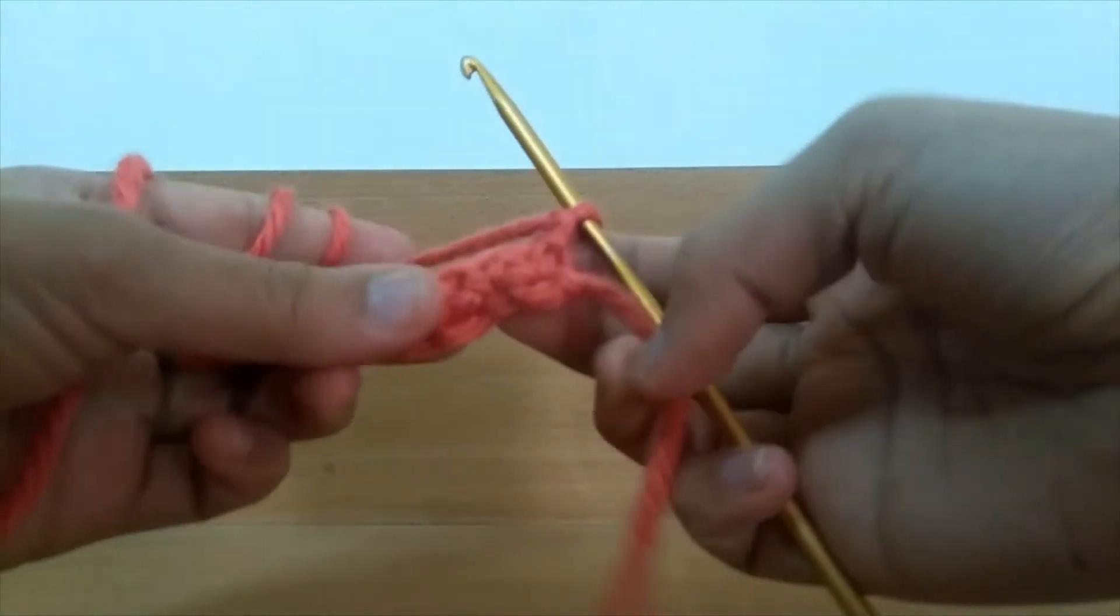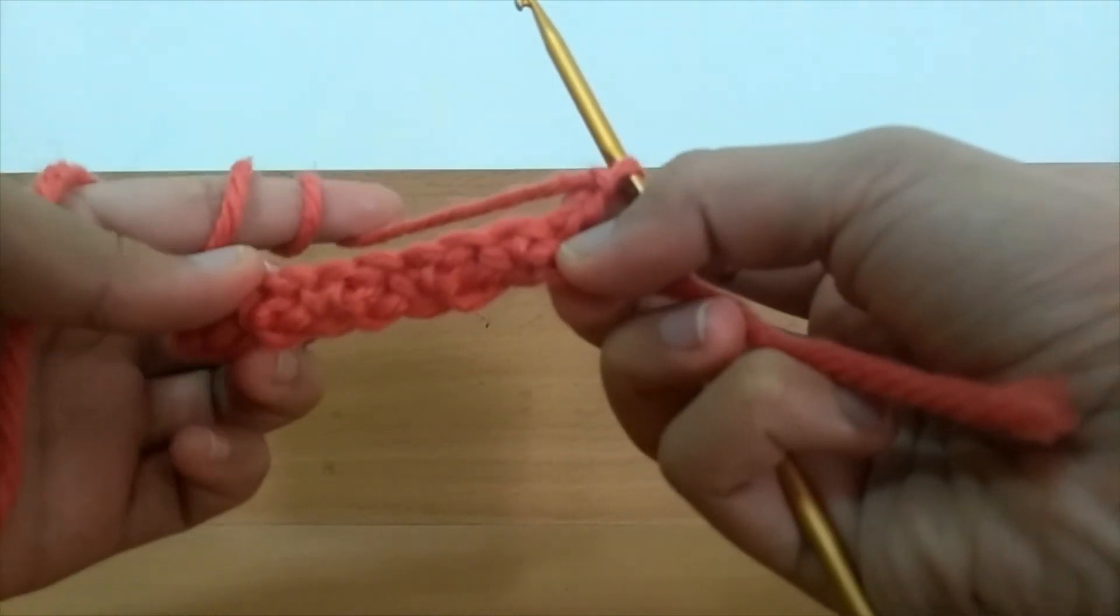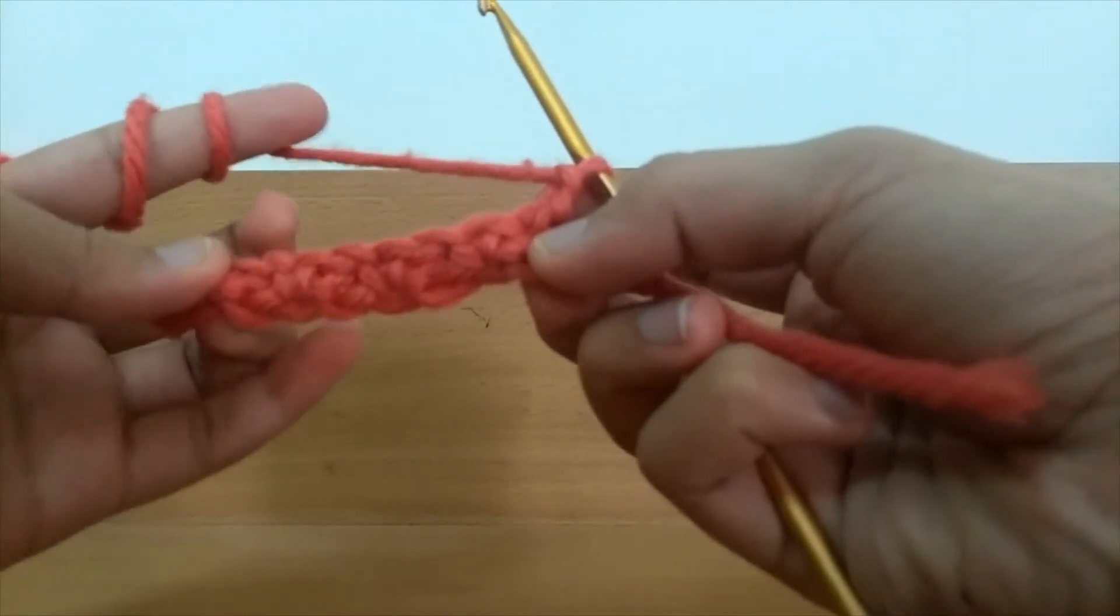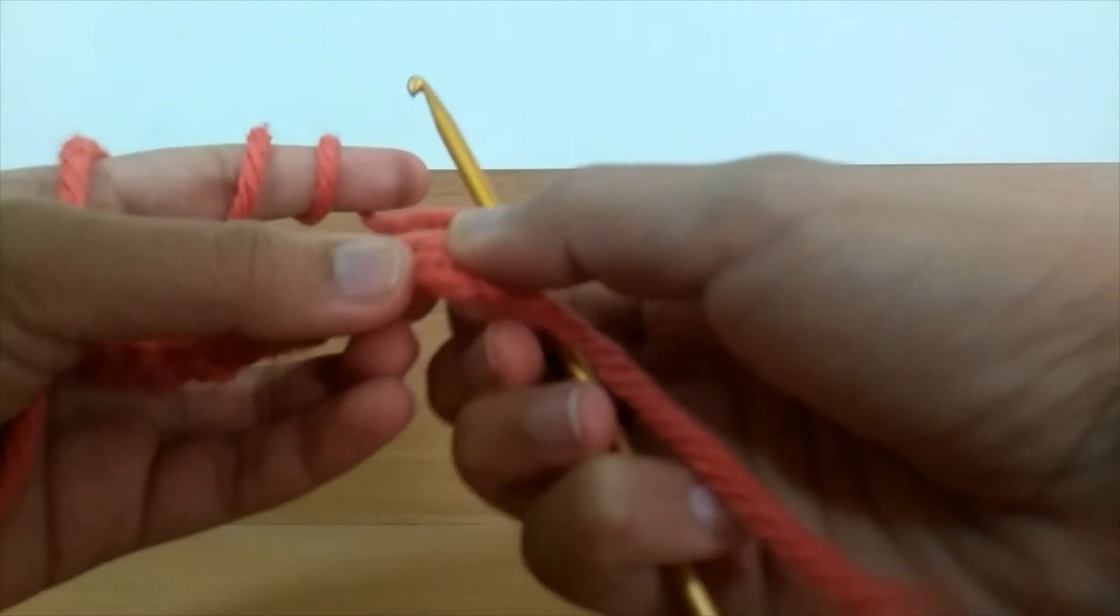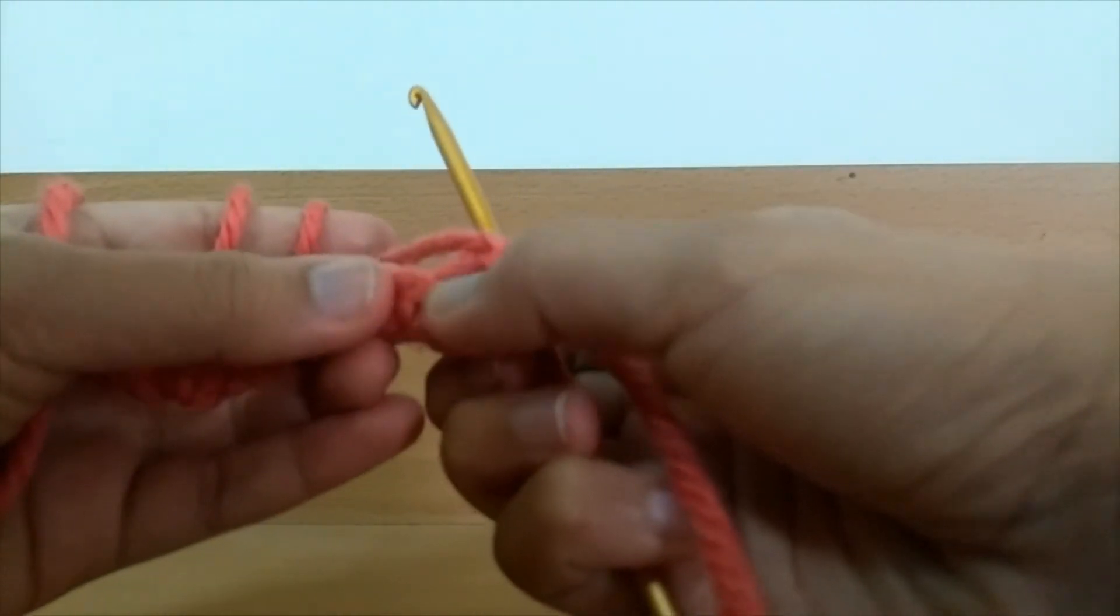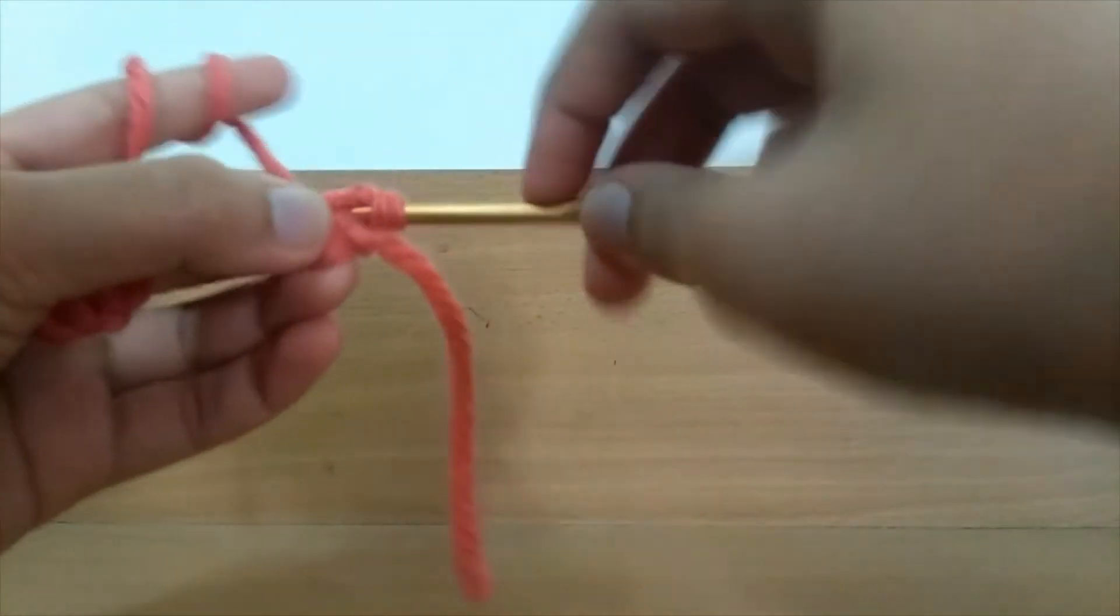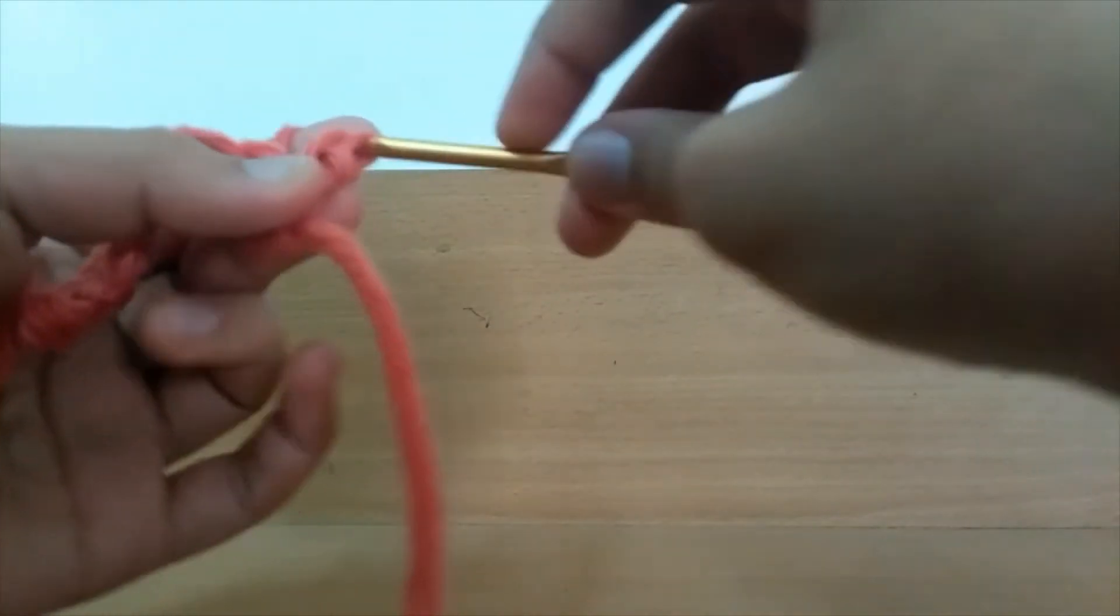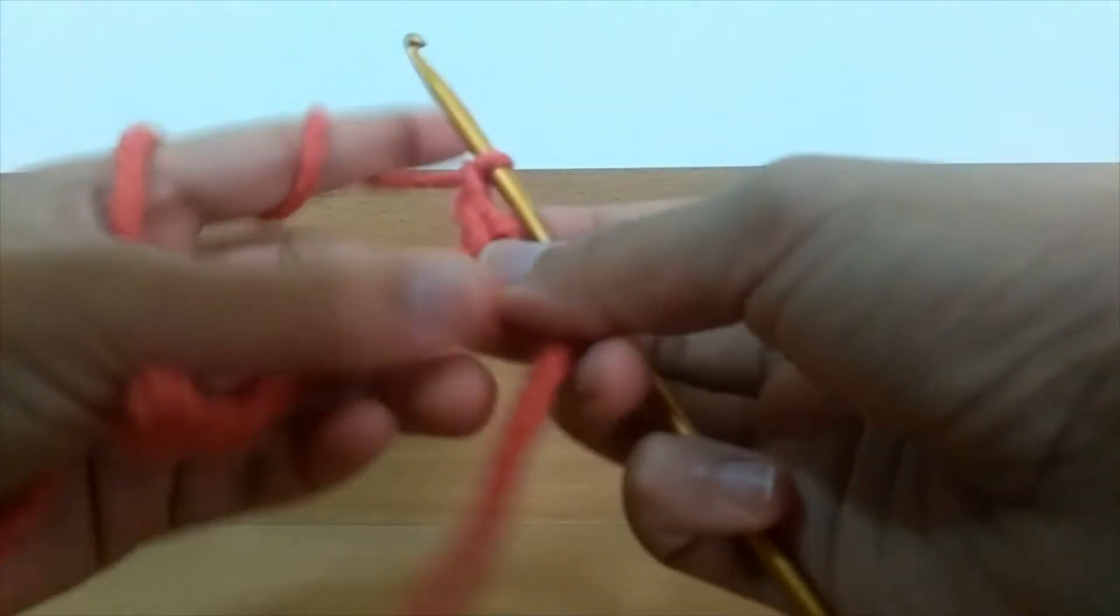This time you're going to do a chain above every previous single crochet and a single crochet into every chain that you've done before. So here you have a chain, single crochet into this chain, skip stitch as usual.